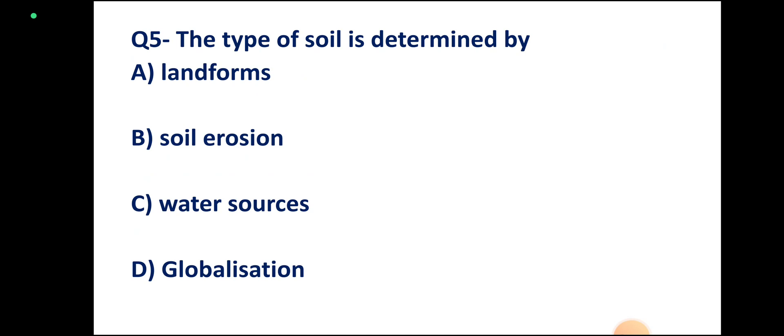Question number 5: The type of soil is determined by landforms, soil erosion, water source, or globalization. Correct answer: landforms.